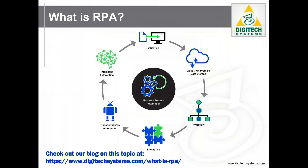As you examine this image, you'll notice that RPA is really one component of the larger category of technologies called business process automation, or BPA. BPA is the umbrella term for all technologies used to automate business processes. It includes both the routing of information from step to step and automatic processing of tasks like sharing information between applications, or what we used to call integration.